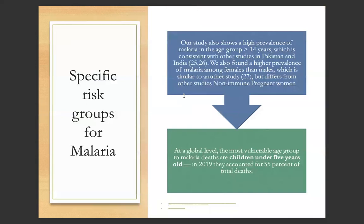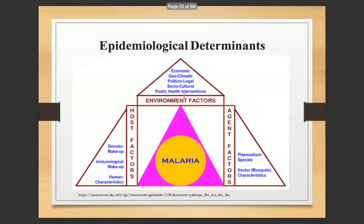Specific risk groups for malaria: Studies show a high prevalence of malaria in the age group over 14 years, consistent with other studies in Pakistan and India. A high prevalence of malaria was also found among females compared to males, and non-immune pregnant women are particularly vulnerable. At the global level, the most vulnerable age group for malarial deaths are children under five years of age — in 2019 they accounted for 55% of total deaths.